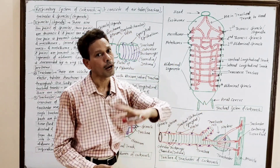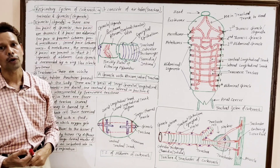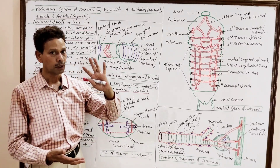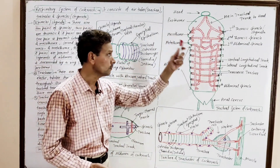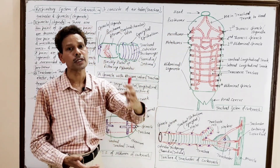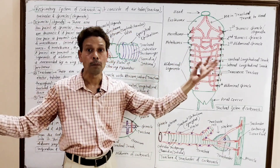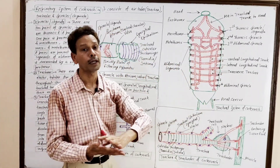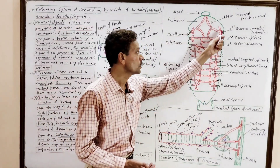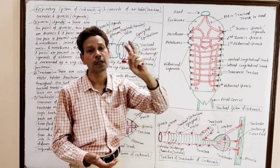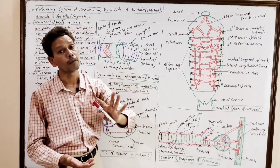This is all about the respiratory system of cockroach, which consists of three parts: fine tubular trachea (air tubes), which open by spiracles or stigmata present on both sides. There are 10 pairs of spiracles or stigmata — two pairs are thoracic and eight pairs are abdominal. The first thoracic and first abdominal spiracles remain open permanently; the rest open at the time of inspiration.